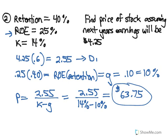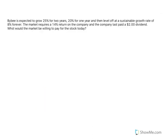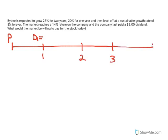Similar to the last question, only this time we were given next year's earnings, so we figured out what would be paid out as the dividend. Finally, we have another stock price question — a growing company using a multi-stage dividend growth model. It's growing at 25% for two years, then 20% for one year, then forever at 8% after that. The last dividend paid was $2. We always want to draw a timeline, going one year out, because the price today is dictated by future dividends: D1 at time 1, D2 at time 2, D3 at time 3, and then continuing forever.